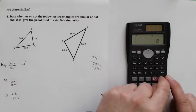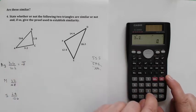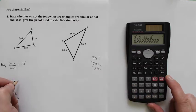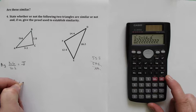3.2 divided by 14.4 gives me a scale factor of 0.2 repeating.